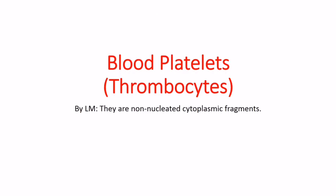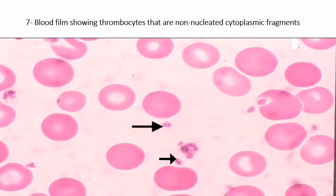Blood platelets (thrombocytes) by light microscope: they are non-nucleated cytoplasmic fragments. Here is a blood film showing thrombocytes marked by arrows, which are non-nucleated cytoplasmic fragments.